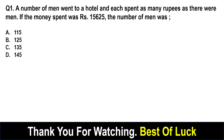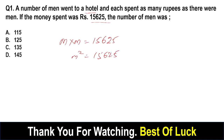A number of men went to a hotel and each spent as many rupees as there were men. If the money spent was 15,625, what is the number of men? The number of men is equal to the square root of 15,625. M squared equals 15,625. The square root of 15,625 is 125.